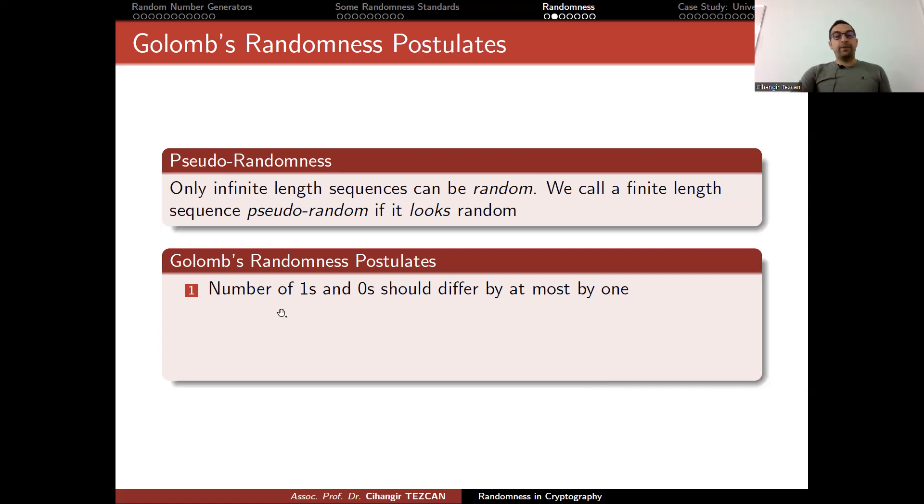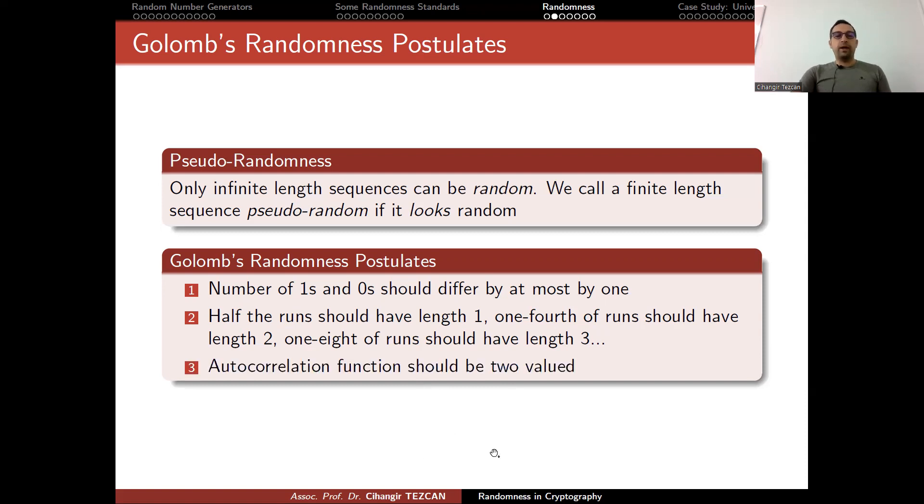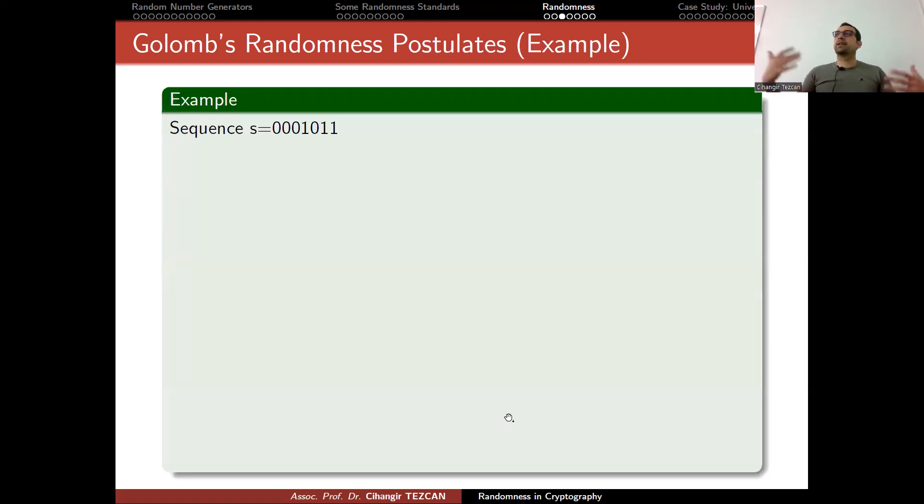Golomb's randomness postulates are as follows. The first one is number of 1s and 0s should differ by at most 1. The second one is half the runs should have length 1, one-fourth of the runs should have length 2, one-eighth of the runs should have length 3, and so on. Of course, if the sequence is not very long, then you have to stop at some point. Finally, autocorrelation function should be two-valued. Now let's see some examples to understand what this means.